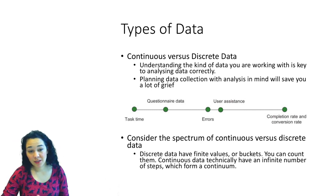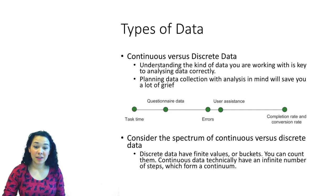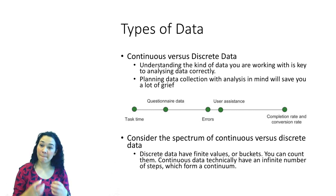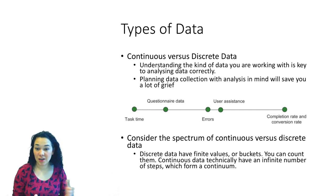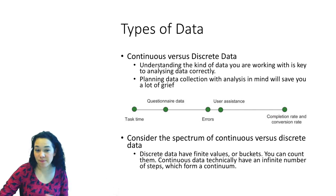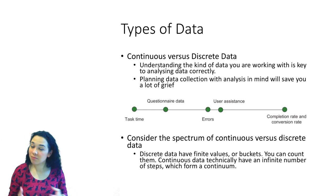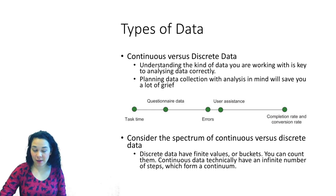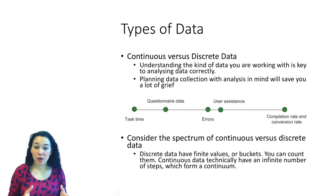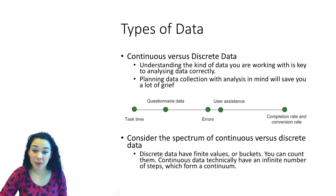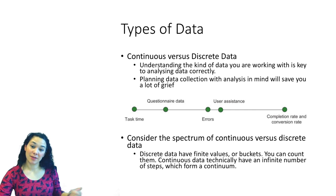Discrete data has finite values or buckets — things that can be measured in whole pieces that you can count. Continuous data technically has an infinite number of steps which form a continuum, such as time or reaction time. Thinking about what type of data you have is important to understand what types of techniques you can use to analyze it and what types of insights you can draw from it.